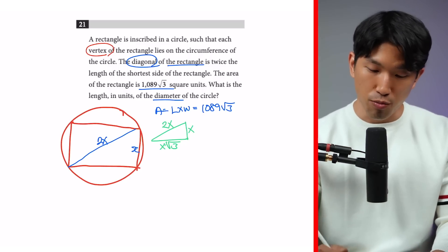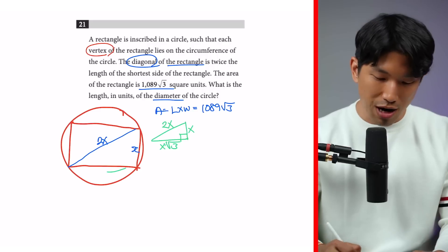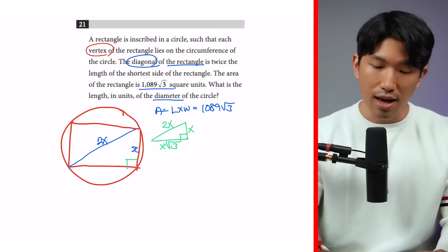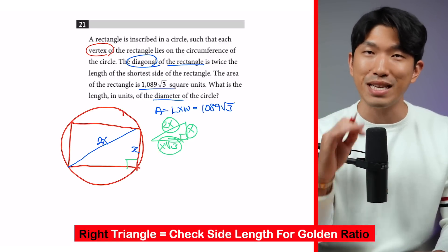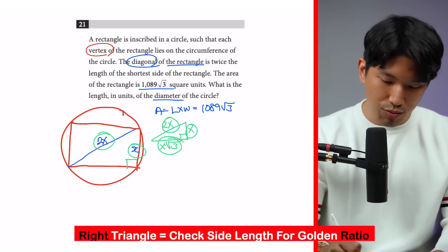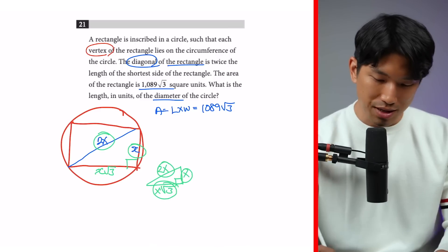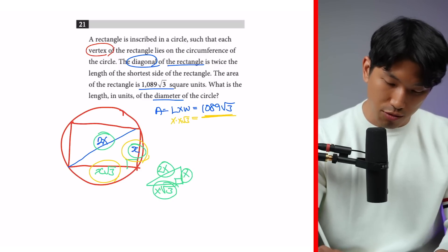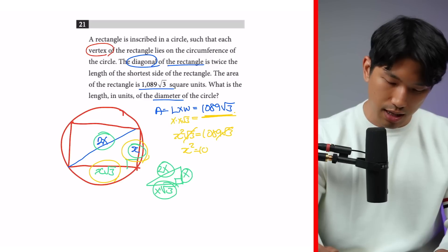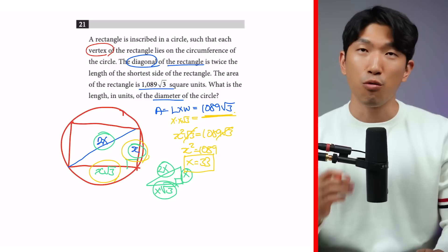When it comes to a special right triangle, we need a right angle. In a rectangle, all corners are 90 degrees, so the triangle formed is a right triangle. When a right triangle has sides in ratio x and 2x, the third remaining side automatically becomes x root 3 — that is the golden ratio. So we have sides x and 2x, meaning the third side is x root 3. The area is length times width: x times x root 3 equals 1089 root 3, so x squared root 3 equals 1089 root 3.